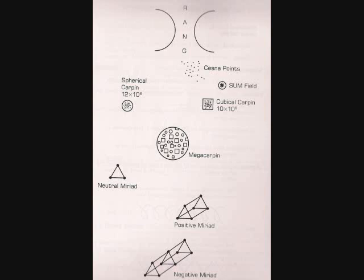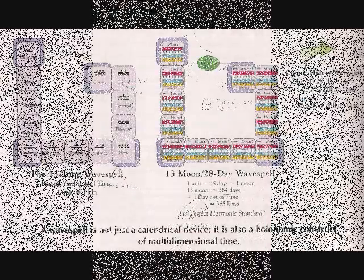Let us peer through the radial looking glass to see where we are really at in cosmic history. This radial looking glass that we speak of is the 13.7 billion year wave spell of cosmic creation.